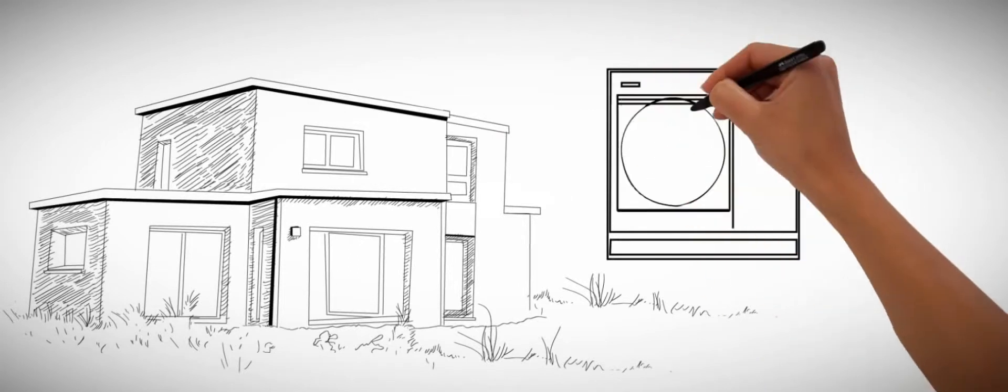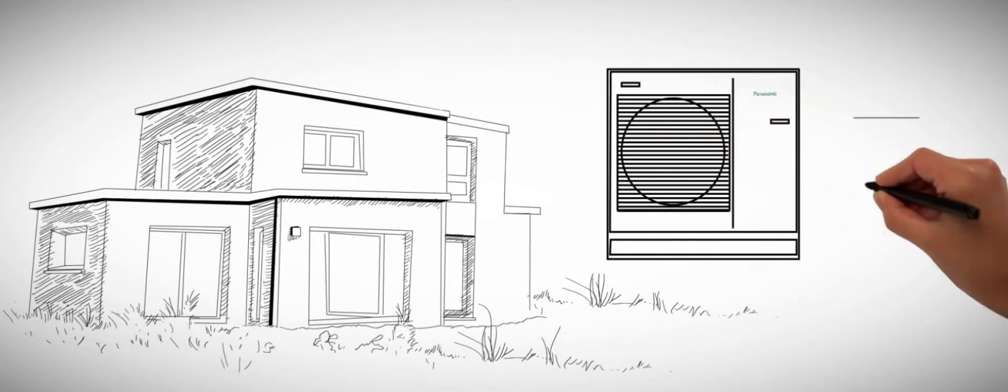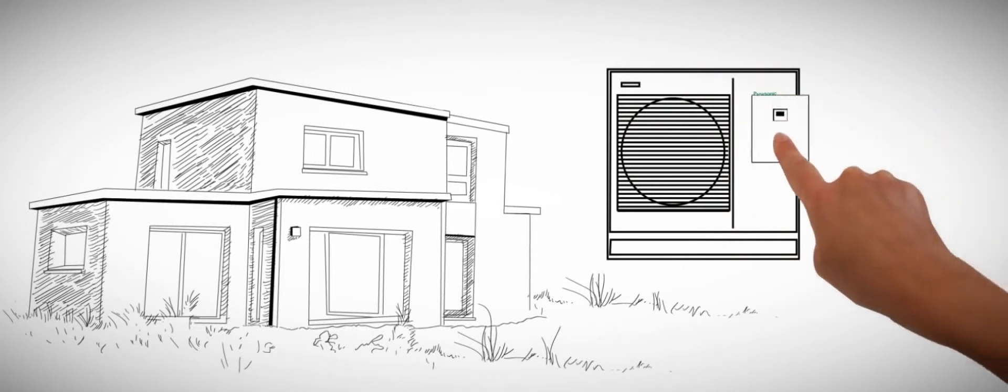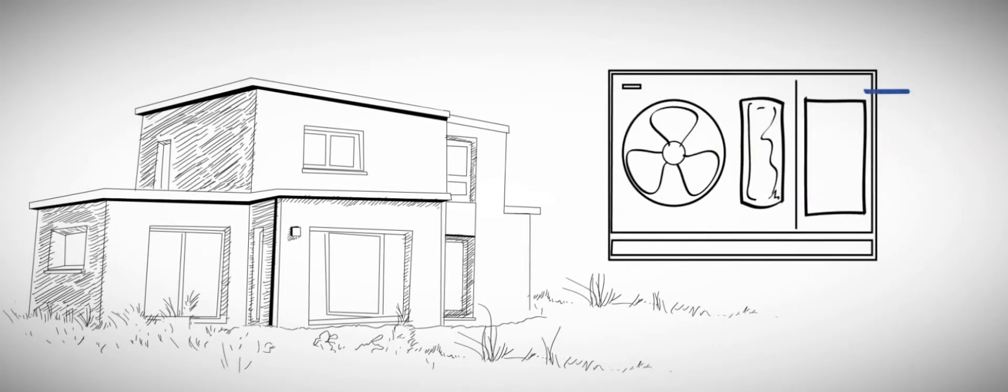Panasonic offers two types of construction: split units for installation in cold areas or monoblock units for simple and space-saving installation.